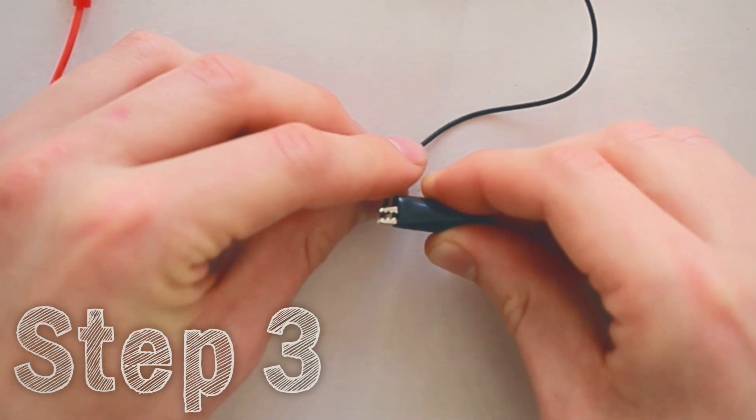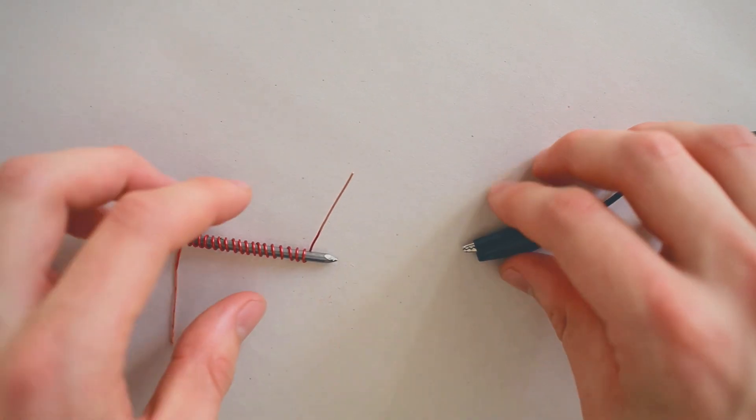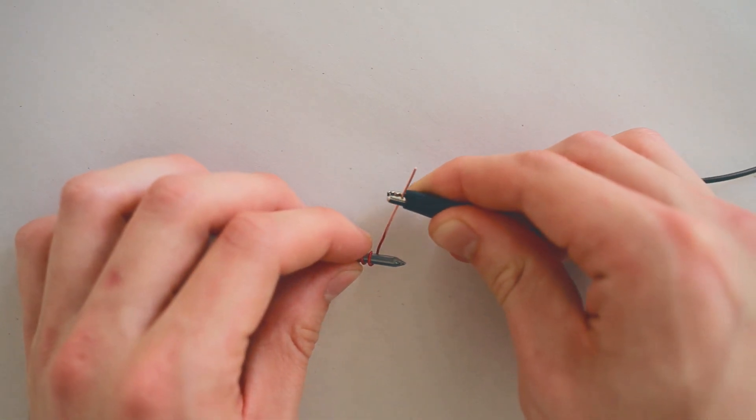Next, let's hook up our alligator clips to our battery pack. Clip one of the alligator clips onto a wire end.